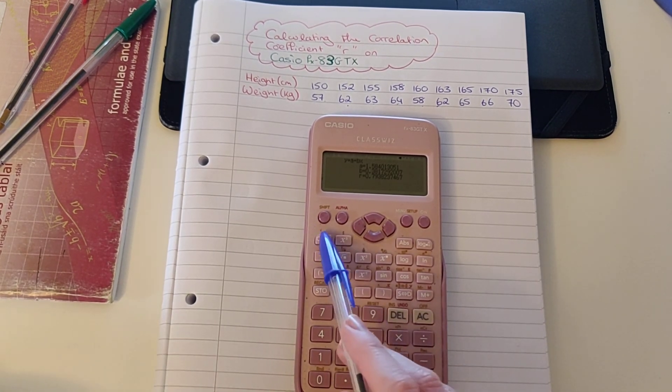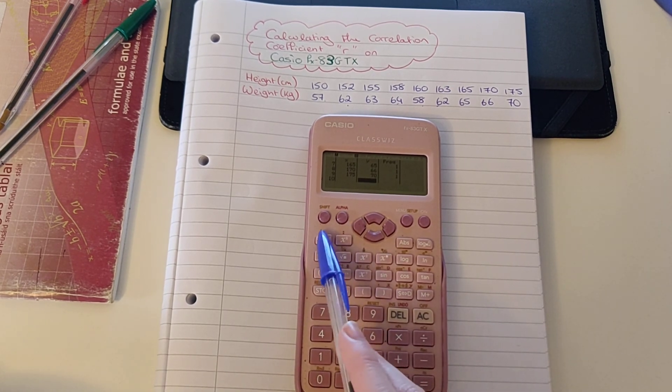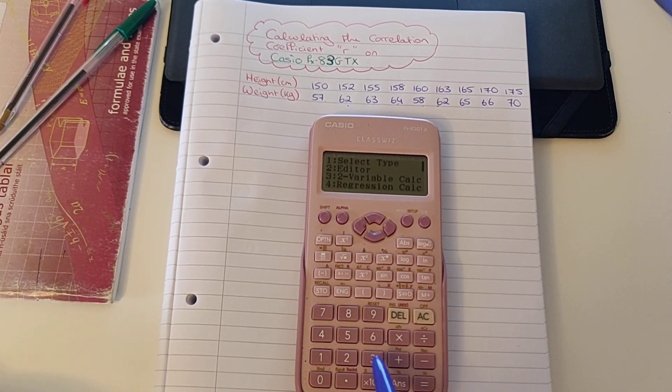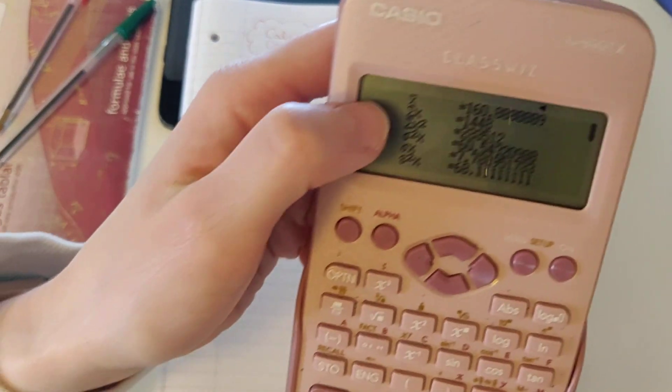Just to show you, if we press option again, it would bring us back to the table. If we press option again, we could press 3 for two variable calculator, and when I do that I can see I have different values here.